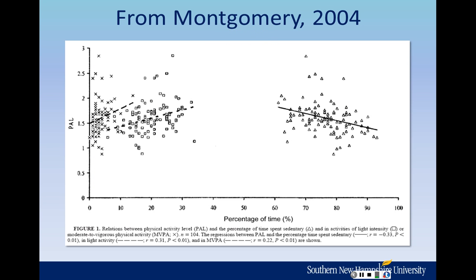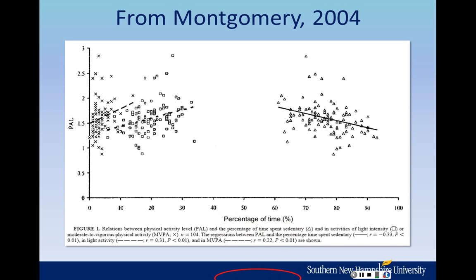The first article is from Montgomery, published in 2004. In this particular article, they measured children and their physical activity levels. On the y-axis — the vertical axis — PAL stands for physical activity level. They also measured the percentage of time children spent doing different behaviors. One of those was percentage of time spent being sedentary, and on the graph, these are represented by little triangles.